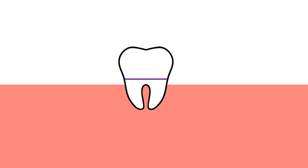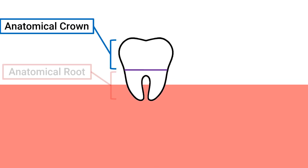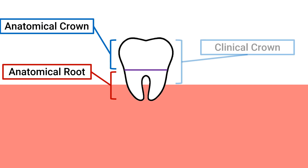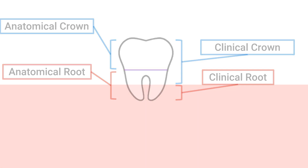The opposite is true if the tooth were to be super-erupted. Again, the anatomical crown and anatomical root remain unchanged, but now the clinical crown is much larger than before, and conversely, the clinical root has drastically decreased in length.